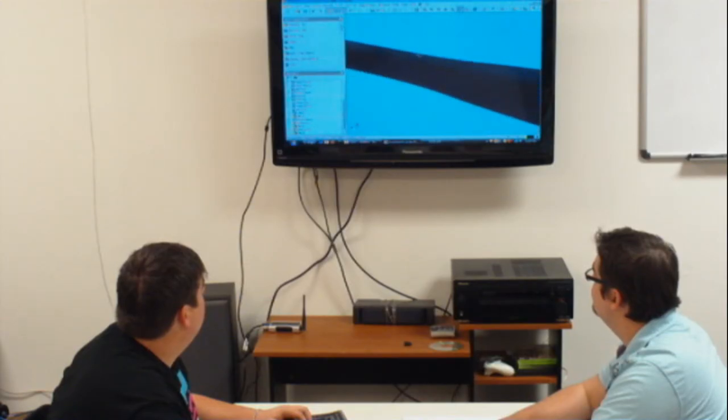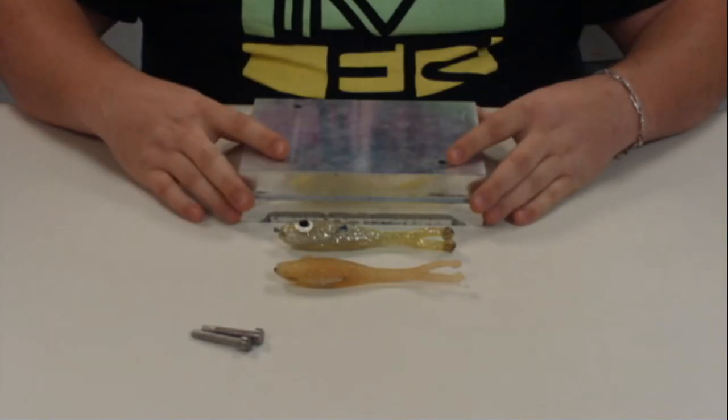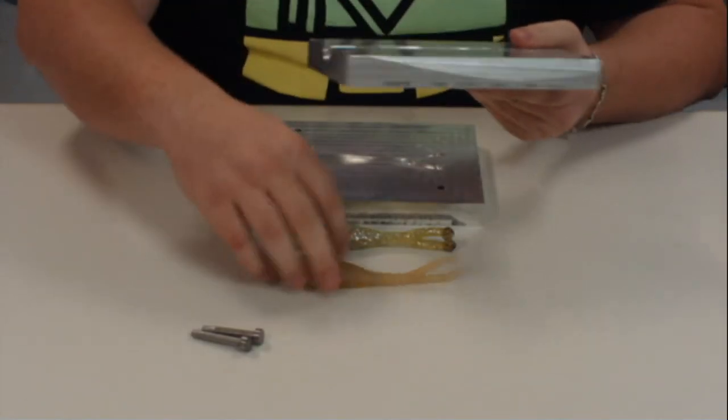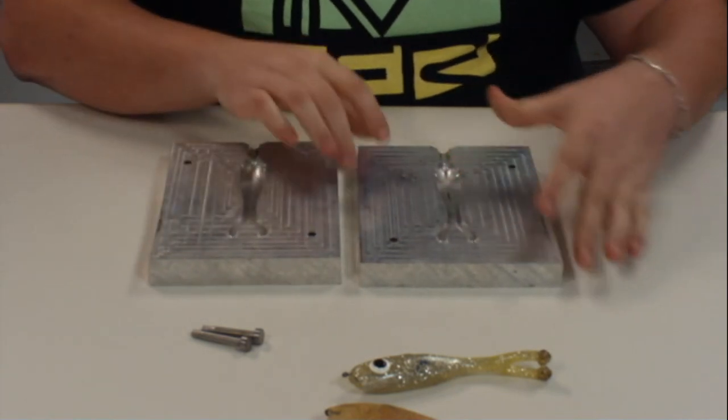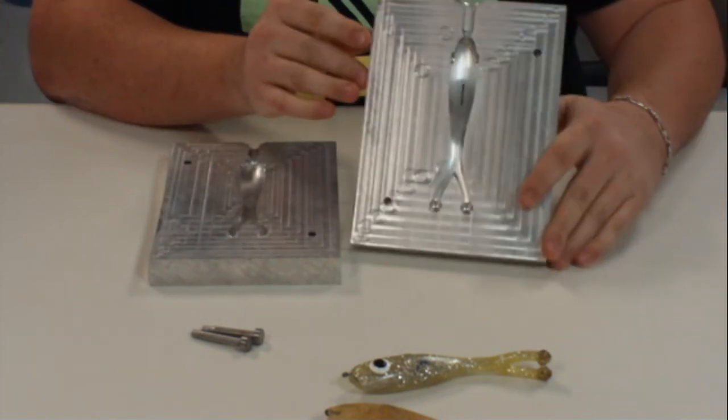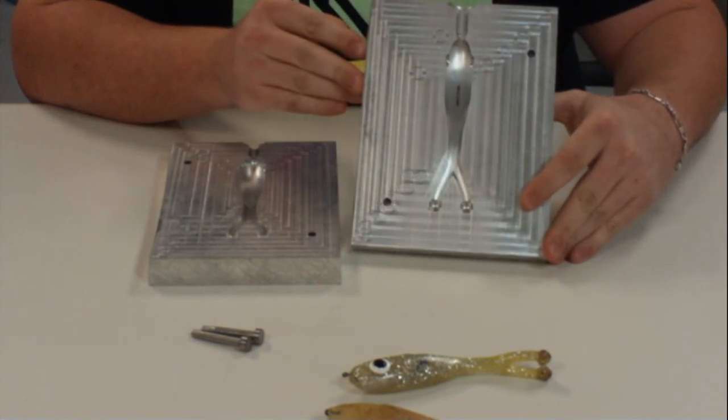Using programs like Inventor or SolidWorks, I can transfer the dimensions of our prototypes into the computer so we can get a production test mold machined. We saw in the last step that we had a test mold where we poured a single shot. We're going to take this, transfer it into the software, and we're only one step away from having a fully functioning mold that allows for multiple lures to be injected at one time.